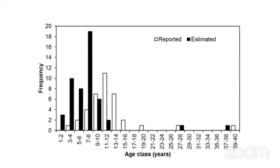When examining the registration documents of captive elephants, their recorded ages shown in white columns are found to be fraudulent. The estimated real ages shown in black columns reveal that wrong ages were registered. The animals are actually very young babies, far younger than the documents claim.